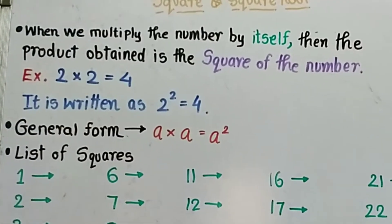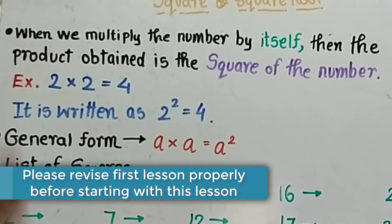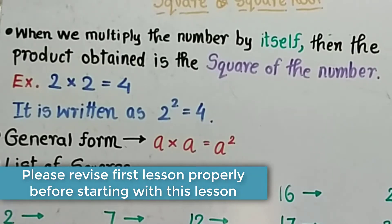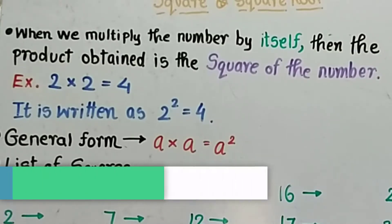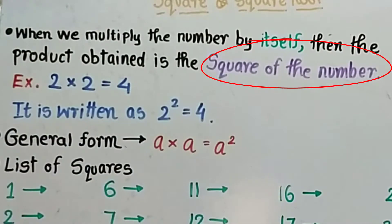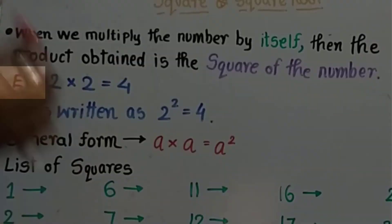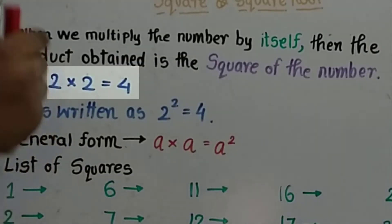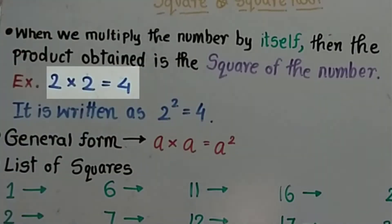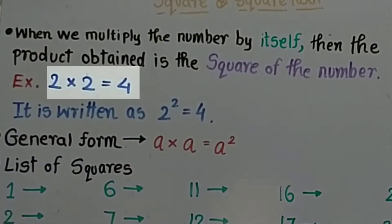Square and square root. When we multiply a number by itself — number means integers — the product obtained is the square of the number. For example, when we multiply 2 with itself, we get 4. So this 4 is known as the square of 2.